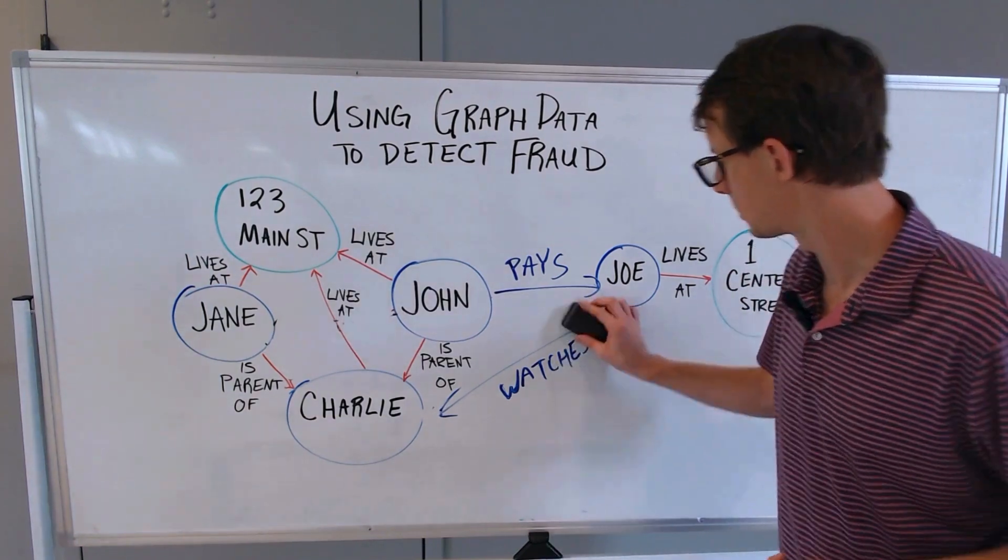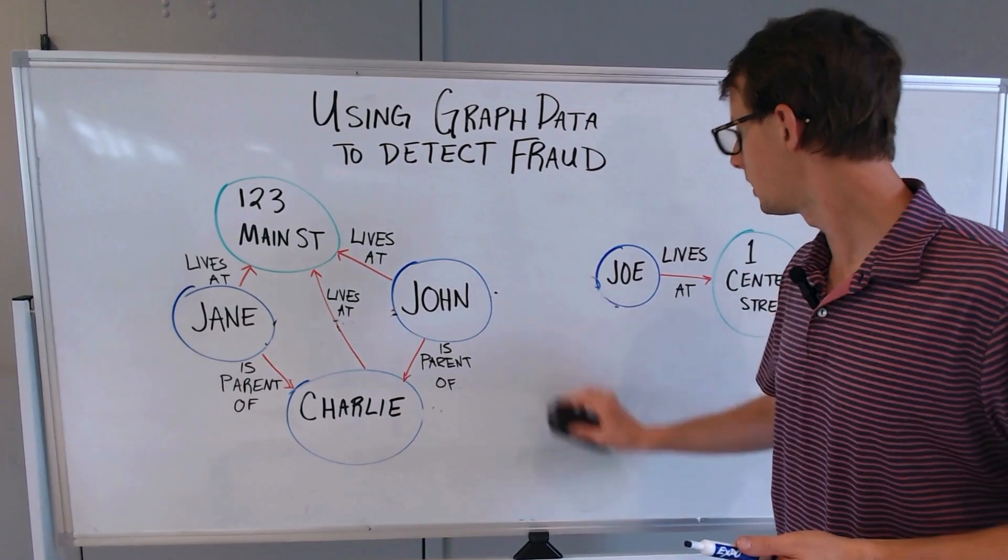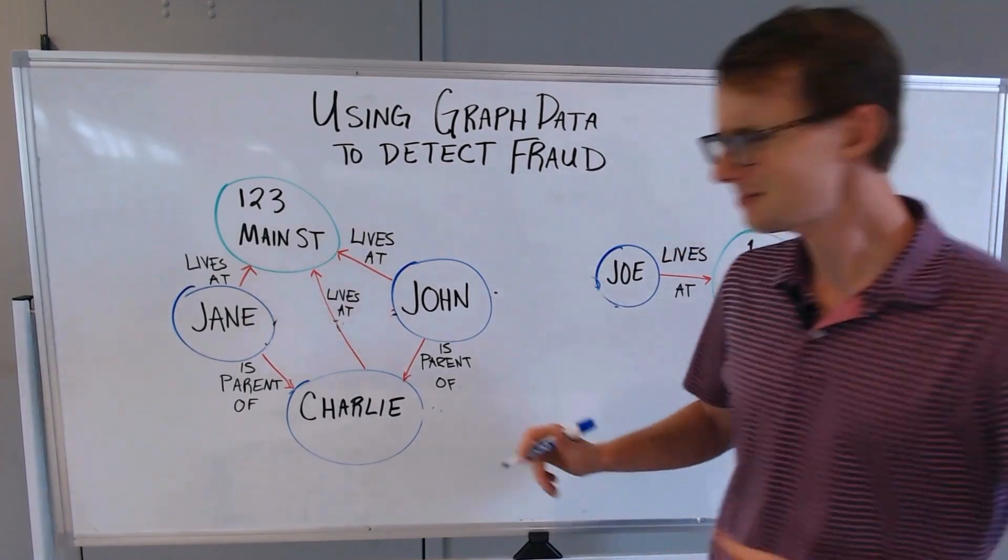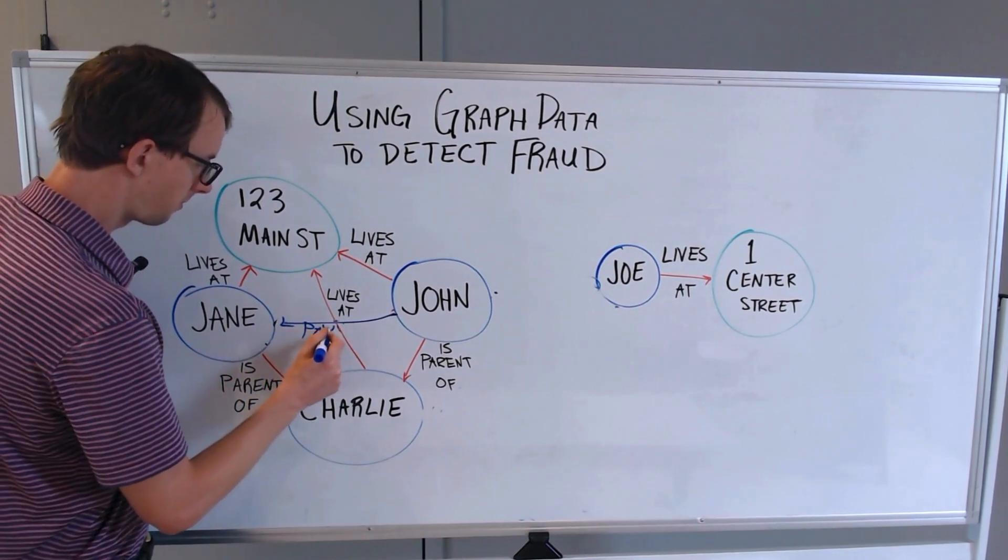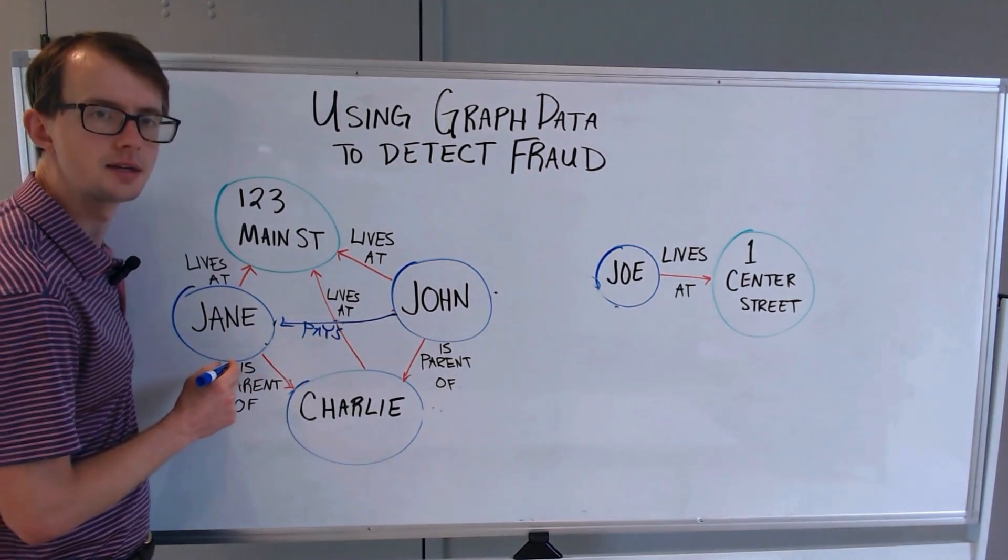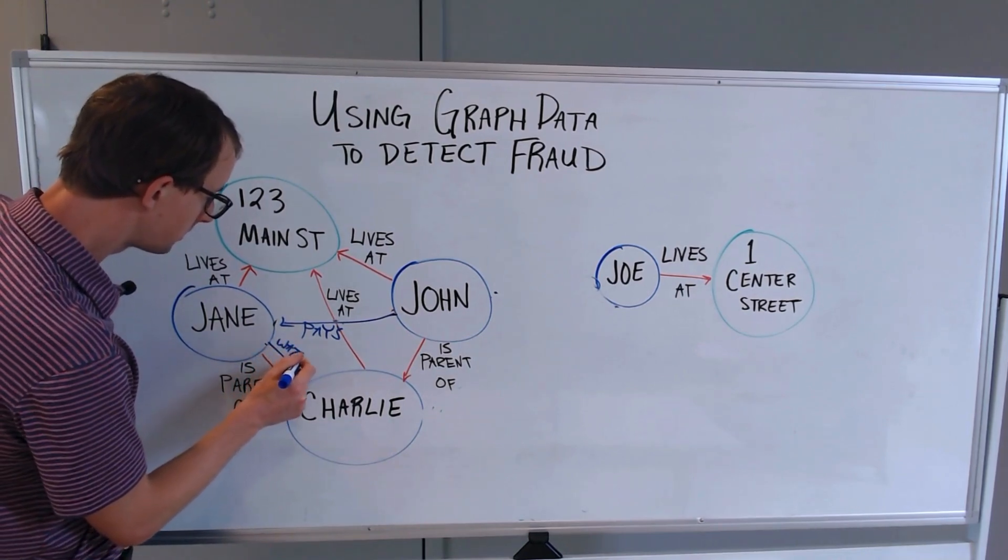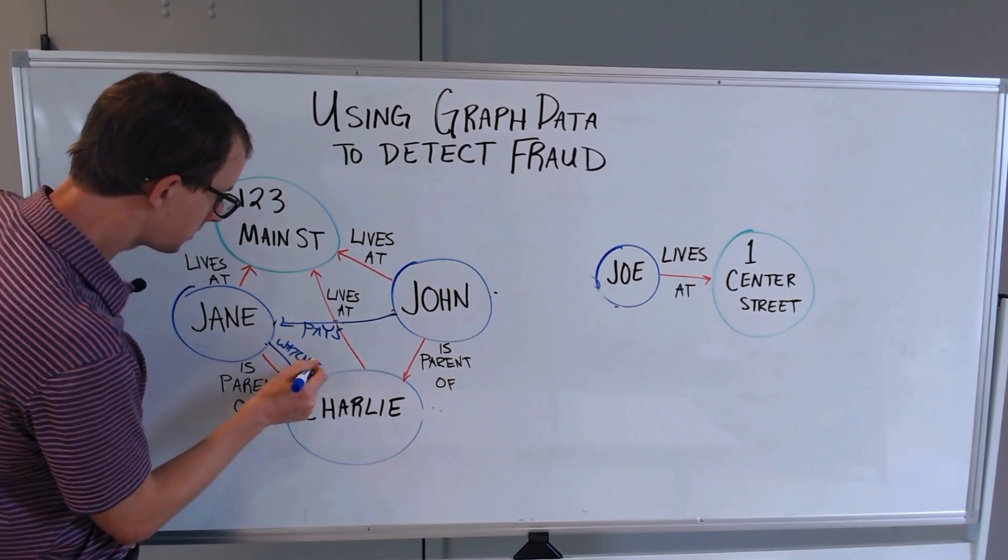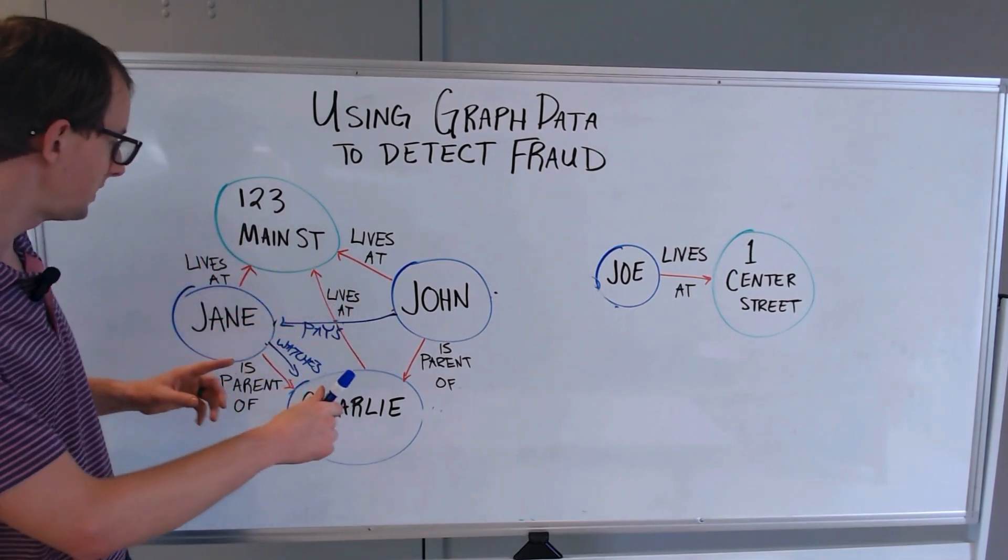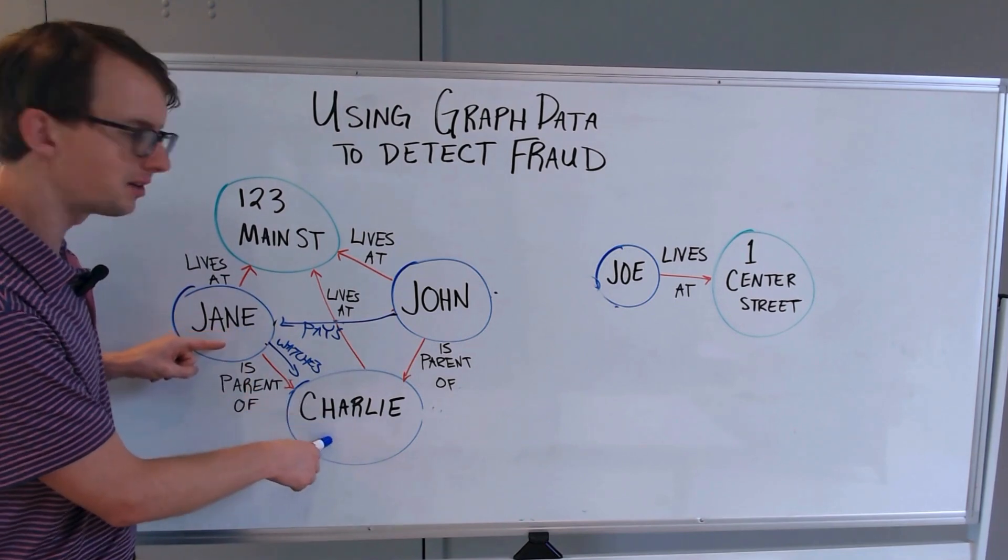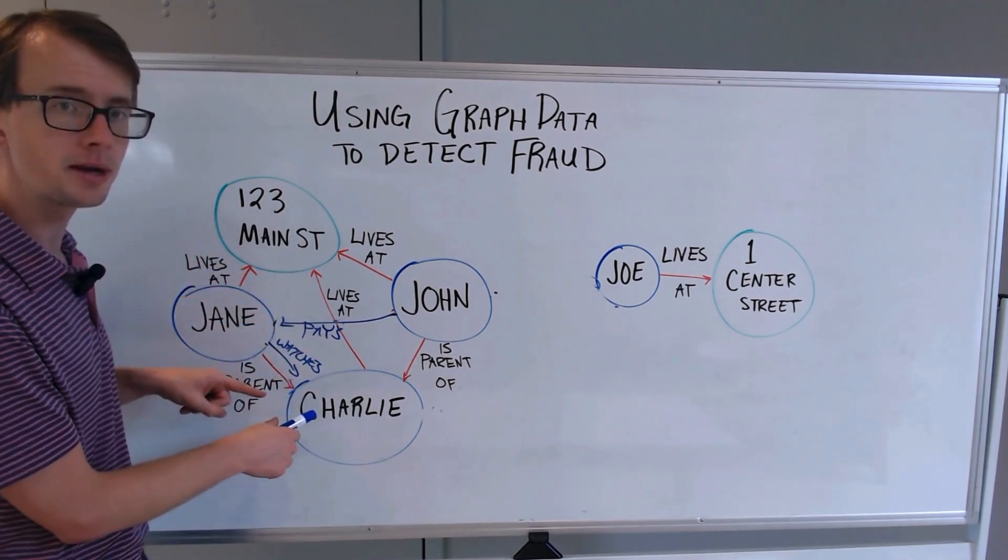Now, what might fraud look like in this particular case? Let's say that instead of John paying Joe, John pays Jane, and Jane watches Charlie. Just looking at the structure of the graph, we see that the individual that's watching the child also lives at the same address and is also the parent.